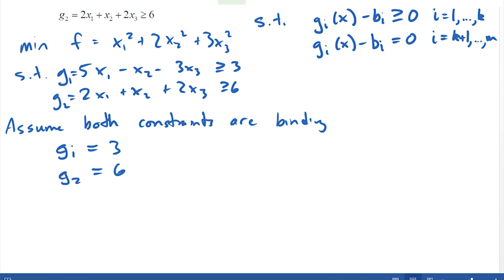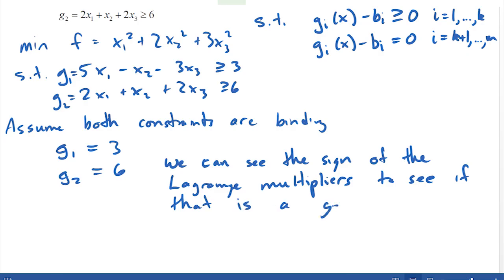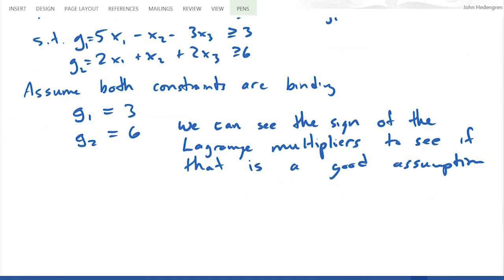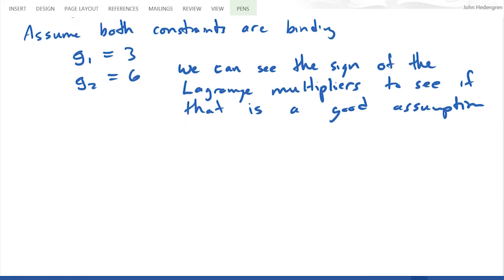So I'm going to treat them like equality constraints first of all, and then solve this problem and then look at the Lagrange multiplier afterwards. We can see the sign of this Lagrange multiplier after we solve the problem, assuming that they are binding, and see if this is a good assumption that g1 should equal three and g2 should equal six.